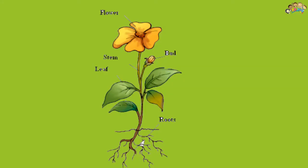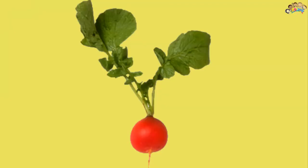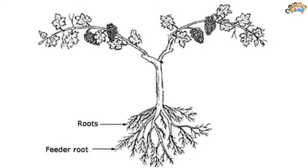Root, in botany, is that part of a vascular plant normally underground. Its primary functions are anchorage of the plant, absorption of water and dissolved minerals and conduction of these to the stem, and storage of reserve foods.